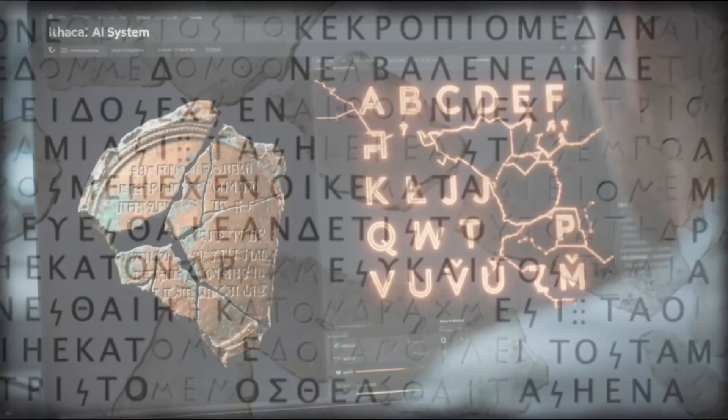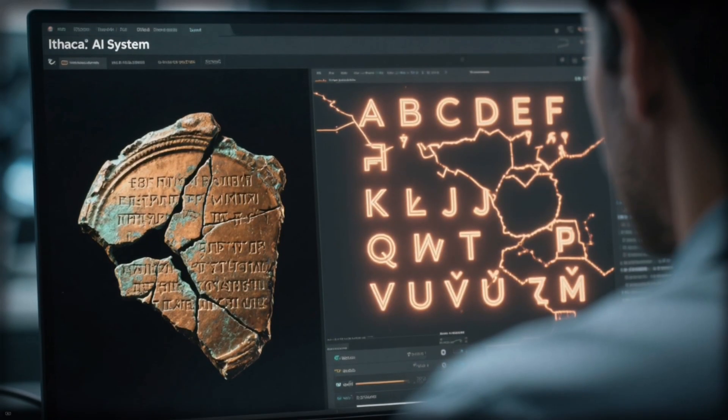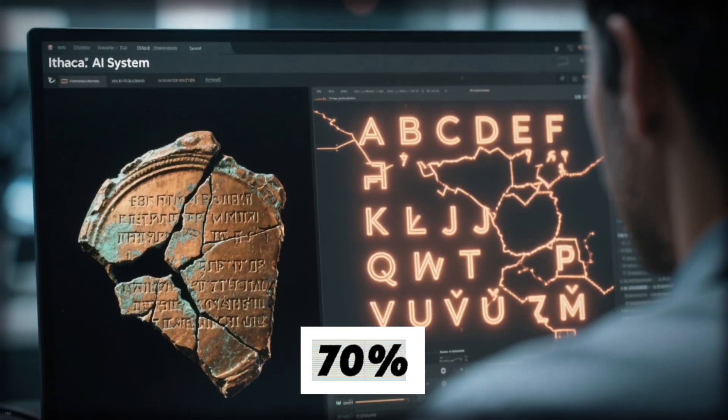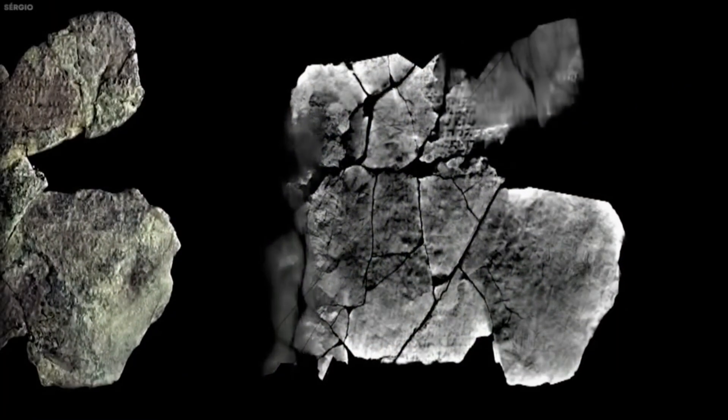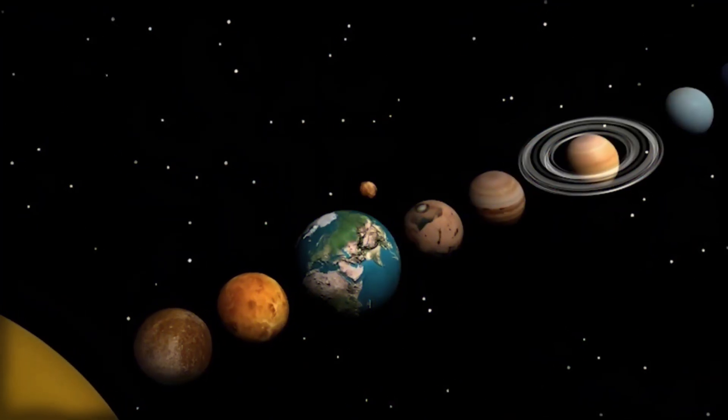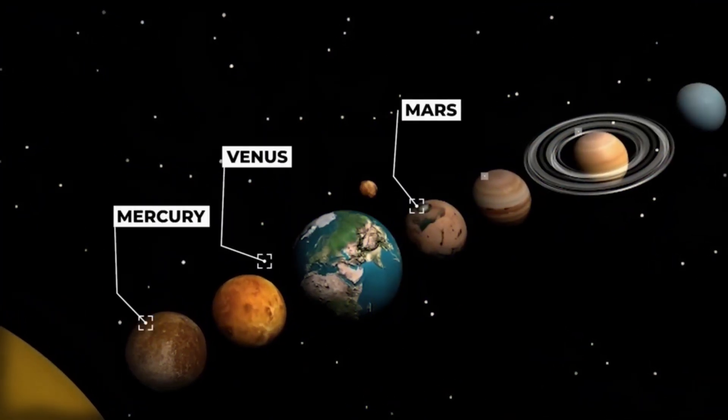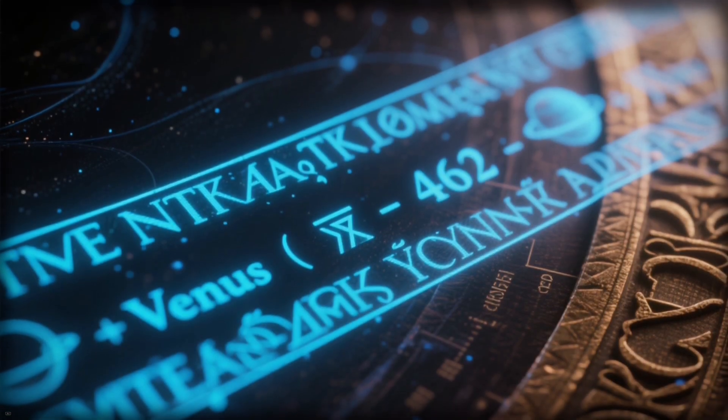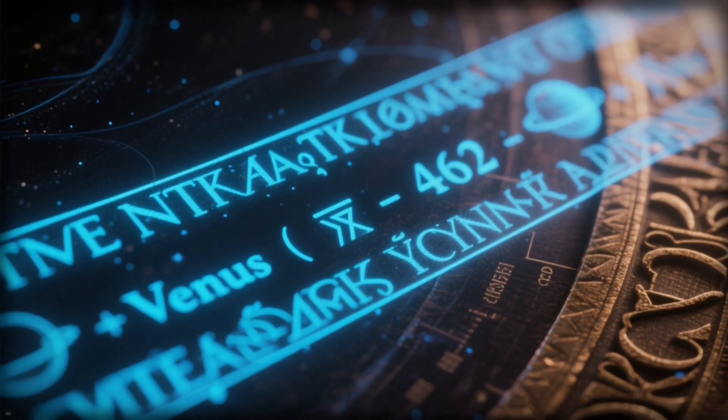Suddenly, inscriptions that had been unreadable for decades became clear. And within those fragments were the answers. Exact ratios describing how each of the known planets moved through the sky. Each number mattered. A single misread symbol could throw an entire orbit off course. But now, with AI's help, scholars could reconstruct those sequences with confidence.